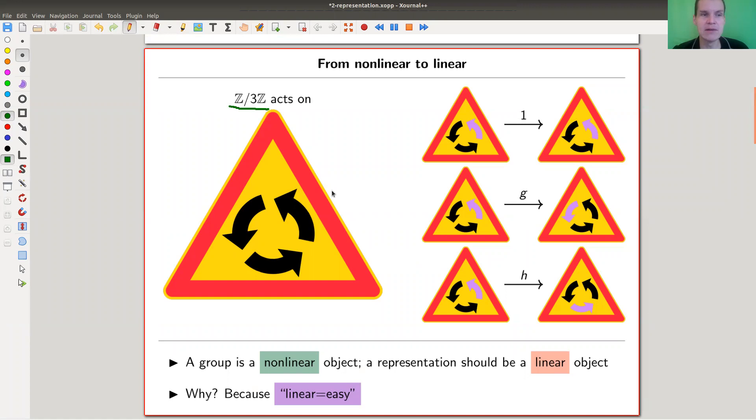So Z mod 3, basically rotational symmetry of order 3. And as you can see or hopefully you can see it acts on this Finnish roundabout sign. I think it's a Finnish roundabout sign. It doesn't really matter. It acts on this object by rotation by the corresponding angle.